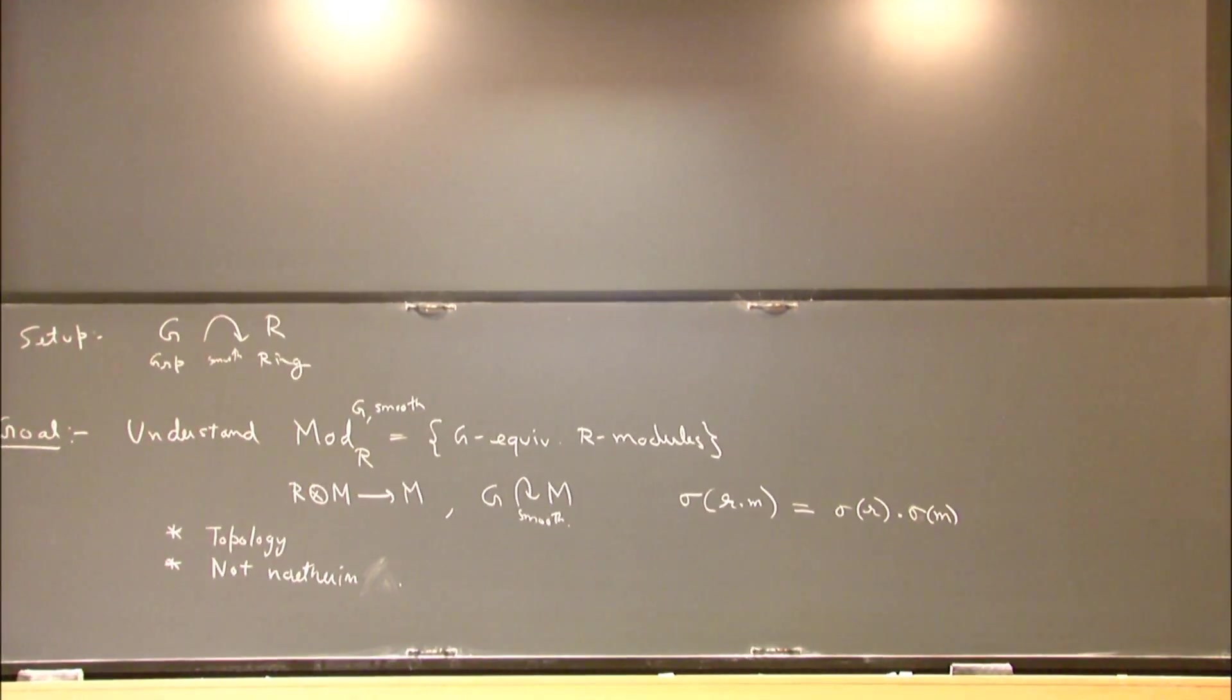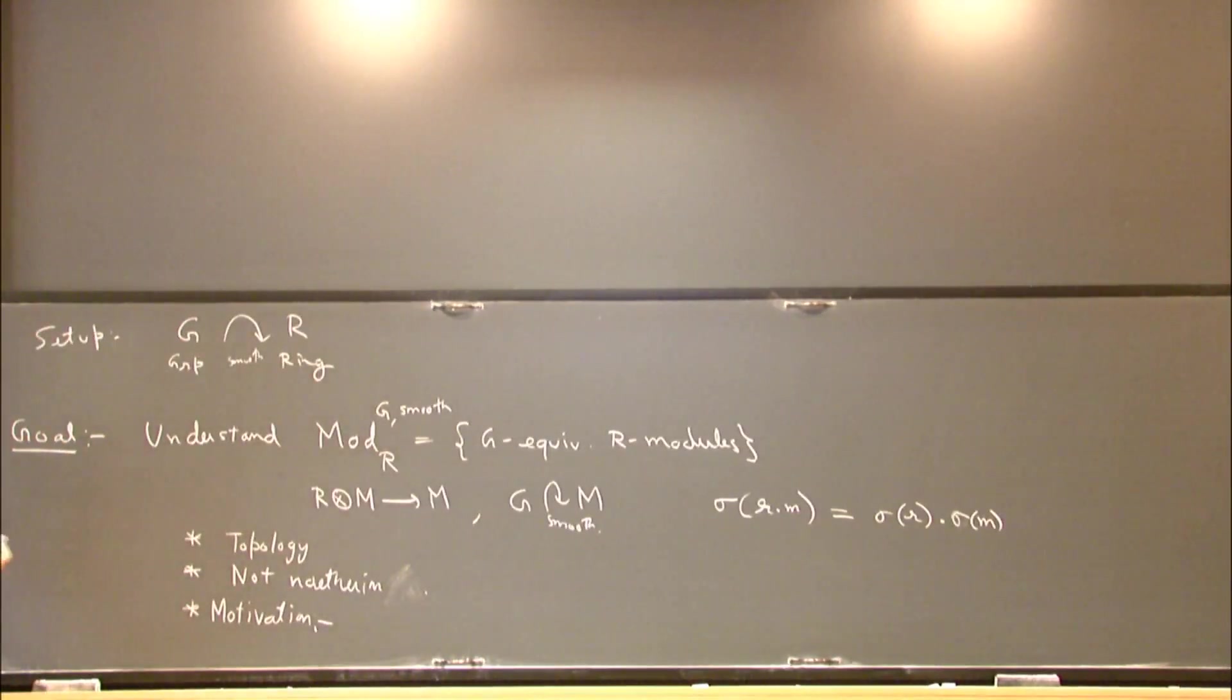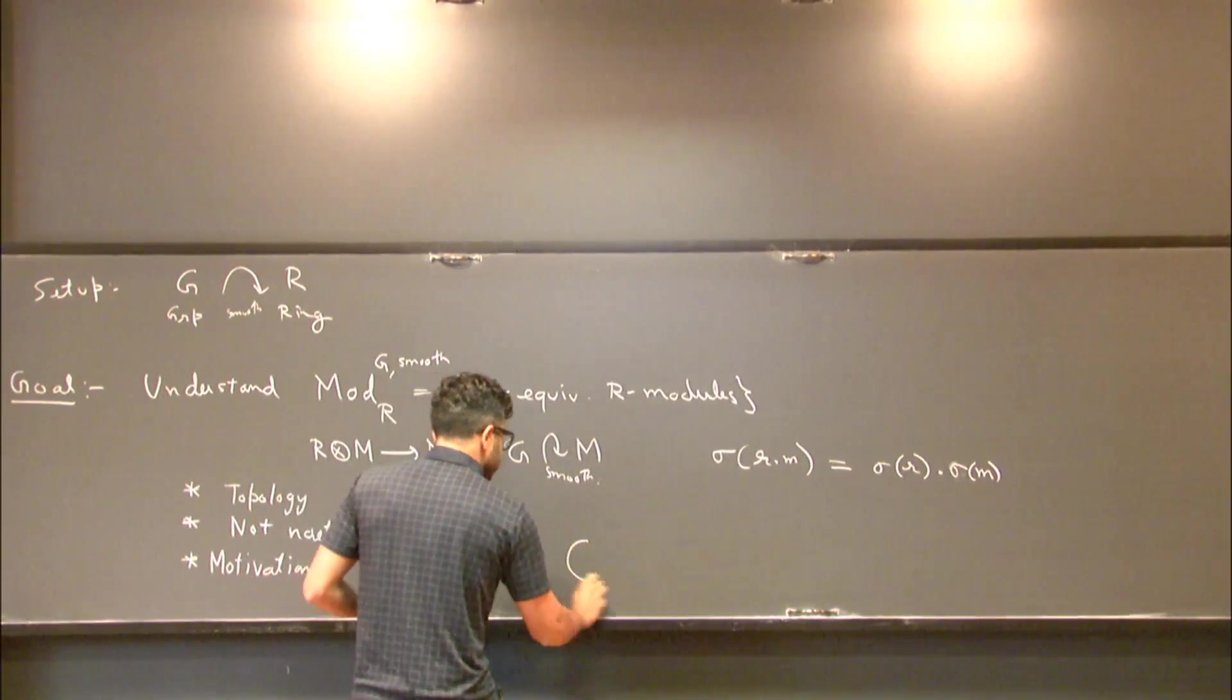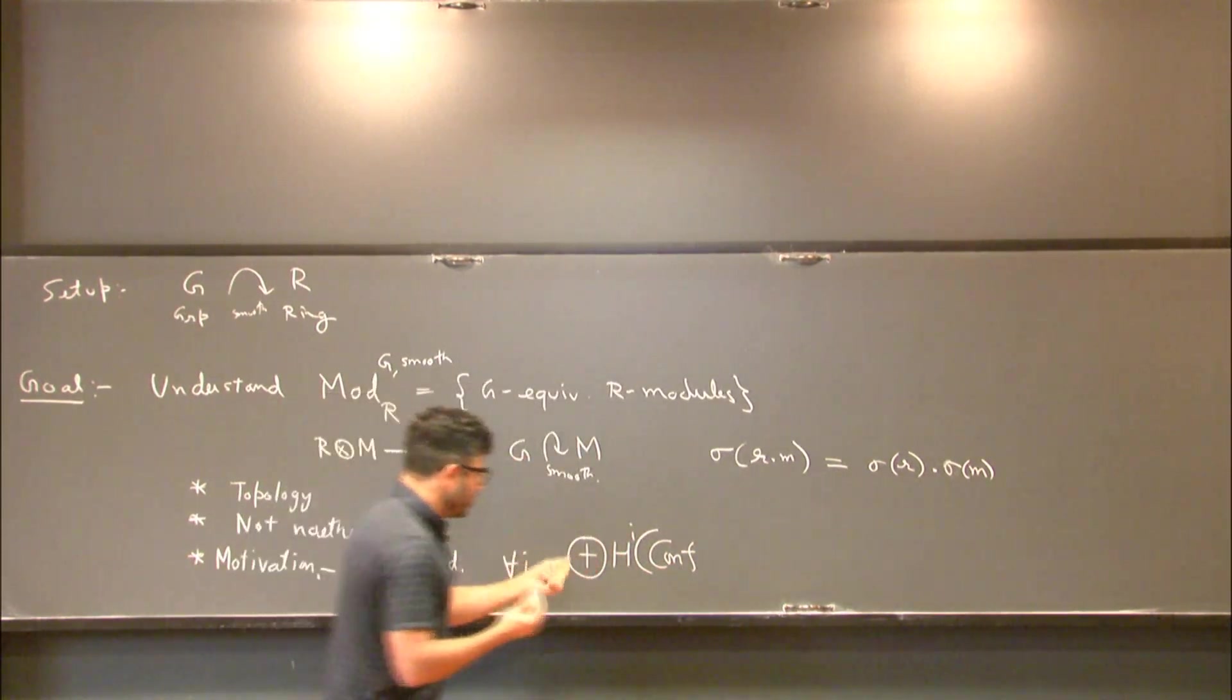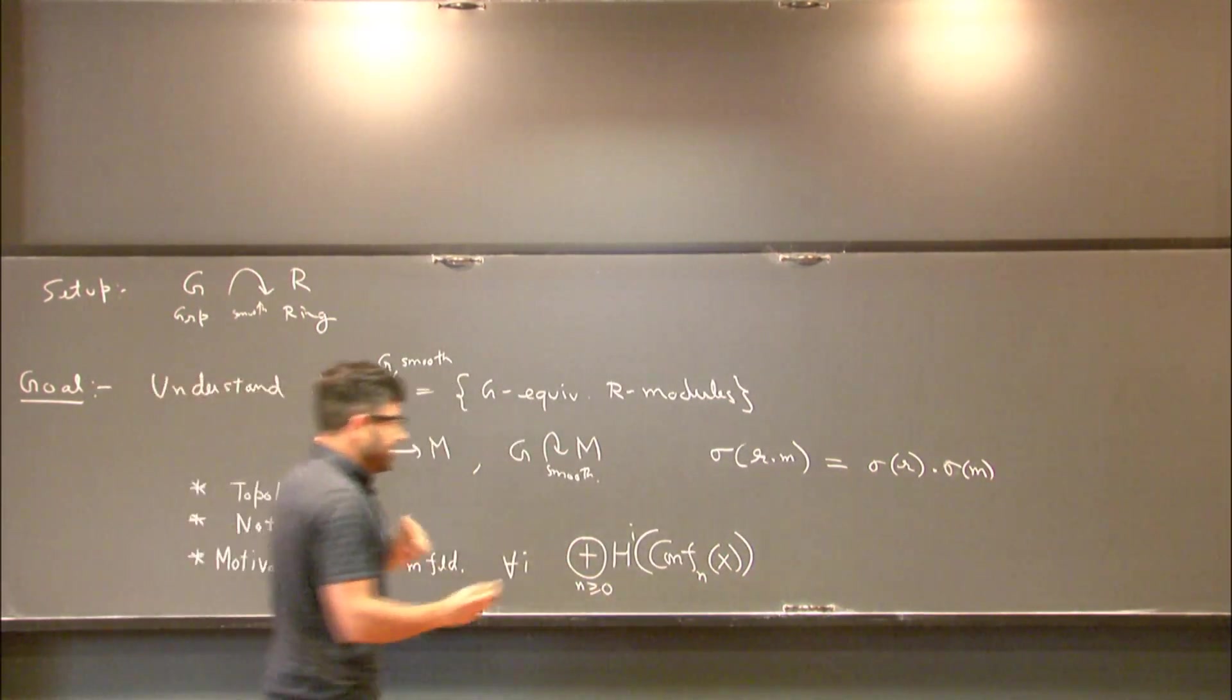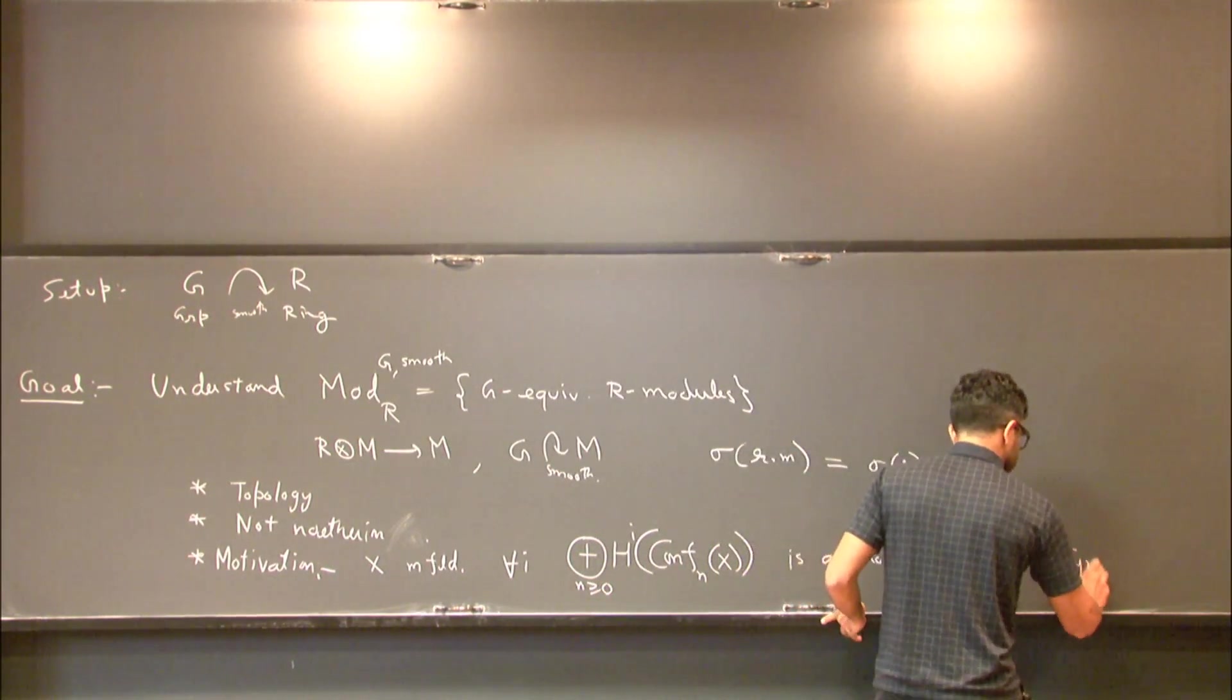So let me explain why I care about such rings and such objects. So my basic motivation is coming from something called representation stability. So if we have a manifold, then you can consider this object which encodes the cohomology of configurations of n points on this manifold.